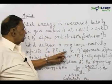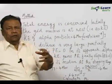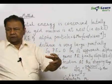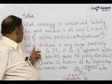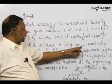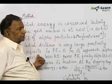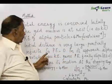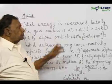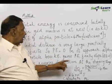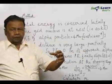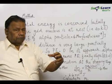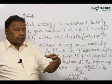Now the initial distance is very large. You see here, the gold nucleus is here, the alpha particle is coming from a very great distance. So the initial distance is very large, practically infinite. So you can take the potential energy to be 0. Now in its approach, what happens? The alpha particle comes - remember that the total energy is conserved.